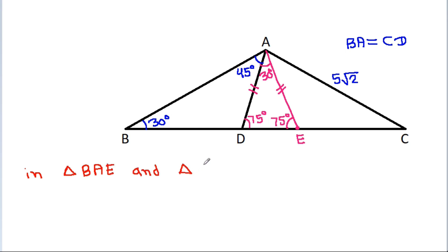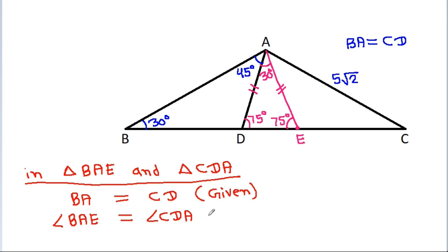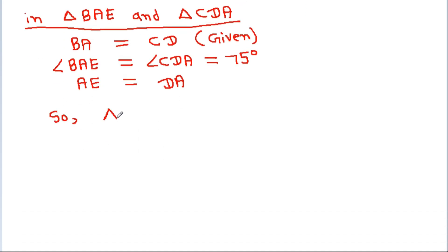In triangles BAE and CDA: BA equals CD (given), angle BAE equals angle CDA which is 75 degrees, and AE equals DA. So triangle BAE is congruent to triangle CDA.